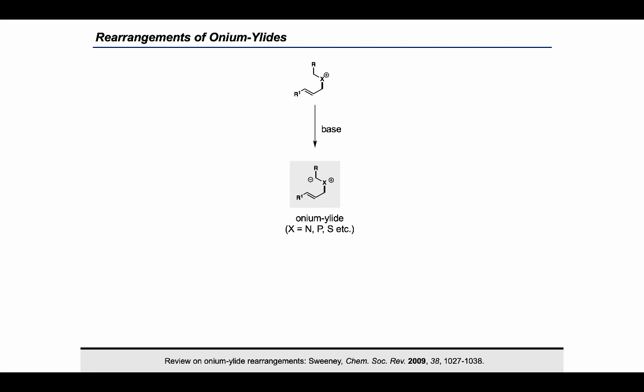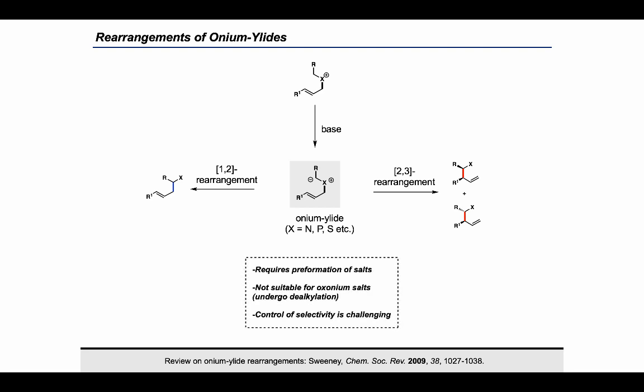These are highly reactive intermediates that can undergo a variety of transformations. For instance, the allylic ylides shown here typically undergo 2,3 or 1,2 rearrangements forming new carbon-carbon bonds that give these functionalized allylic compounds. Typically, these ylides are formed by base-mediated deprotonation of the corresponding salts, which is one of the drawbacks because this requires the pre-formation of the salts in order to generate the ylides.